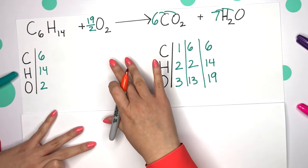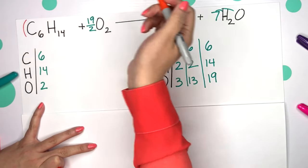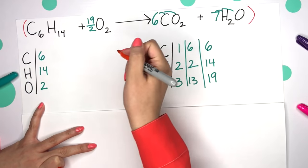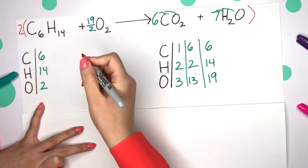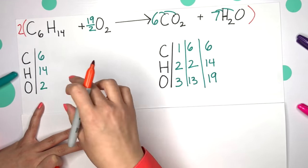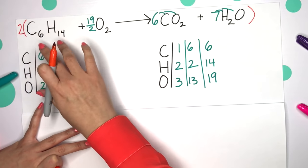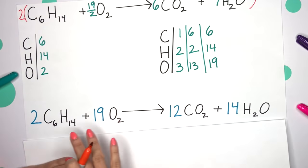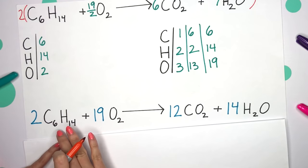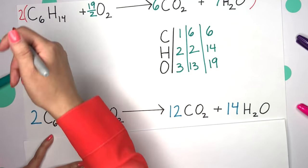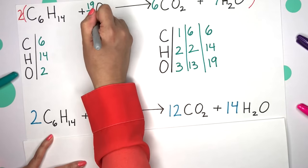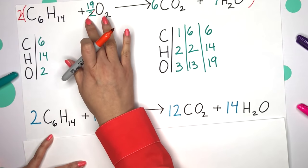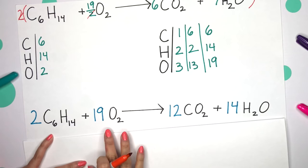So your very last step is to multiply all of your subscripts by two. So multiplying all of your subscripts, what would happen is we're actually going to get a two in front of that C6H14. And this two would cancel out with the two on the bottom of your fraction, just giving us a whole number of 19.